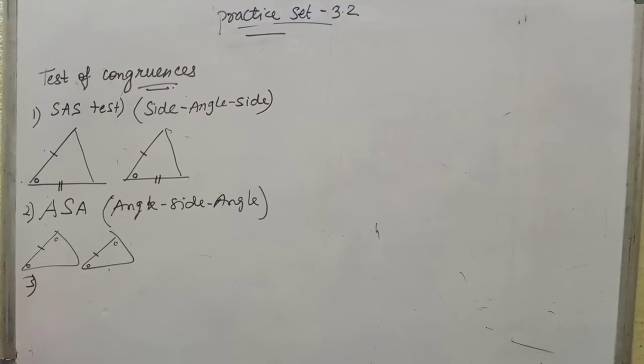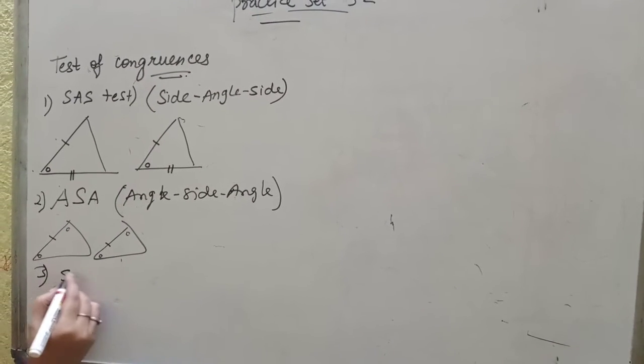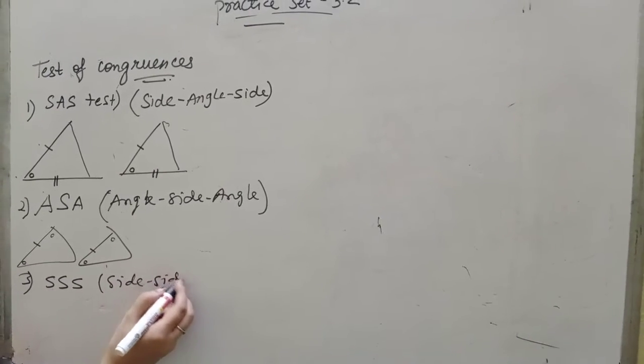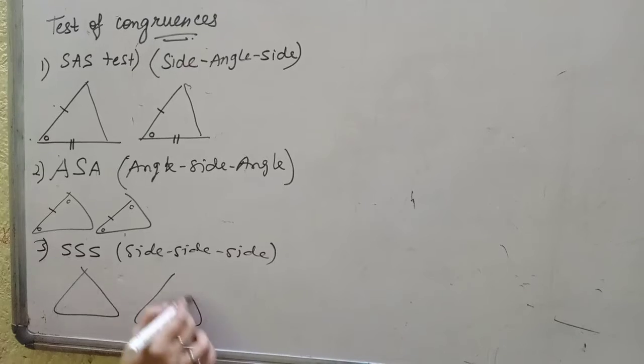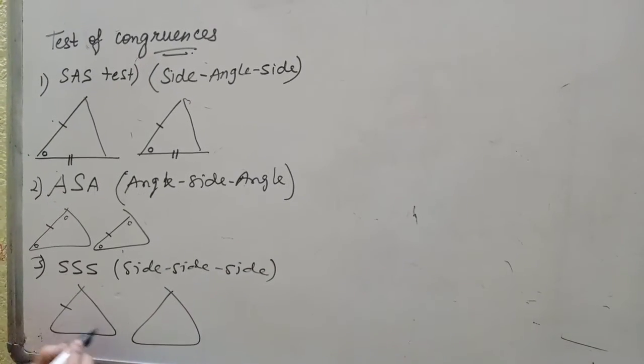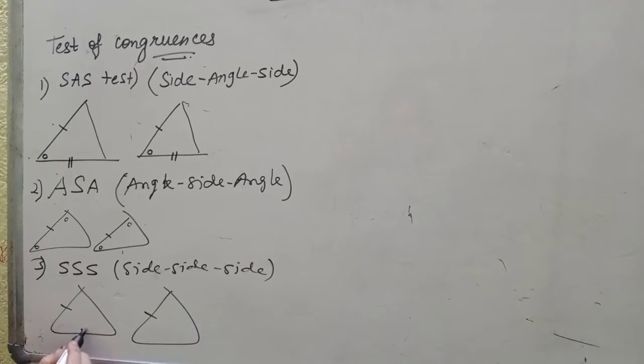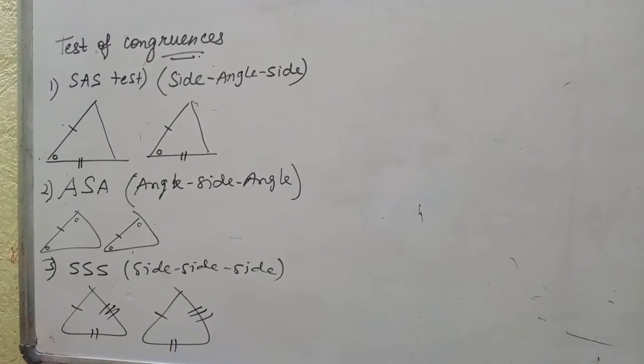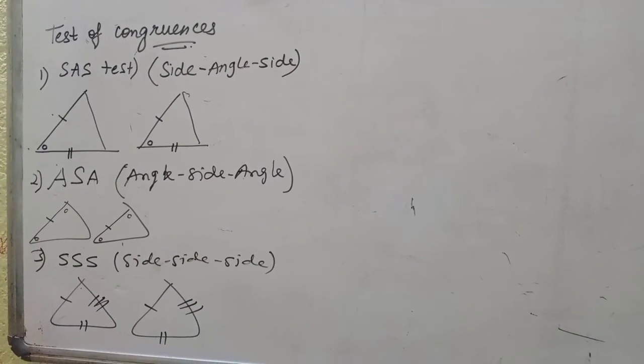The third one will be SSS. Means Side-Side-Side. In this, two triangles are given. This side is similar to this side, this side is similar to this side, and this side is similar to this side. There are no angles given similar.